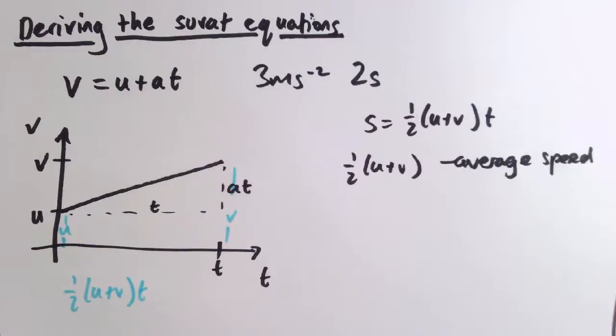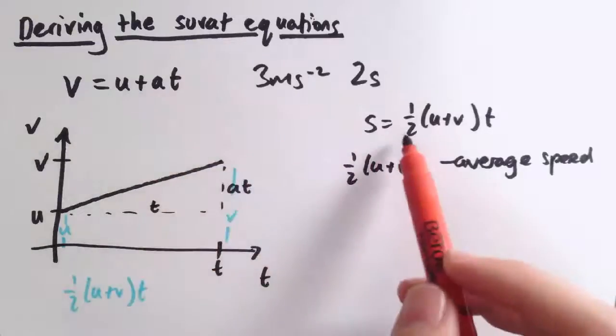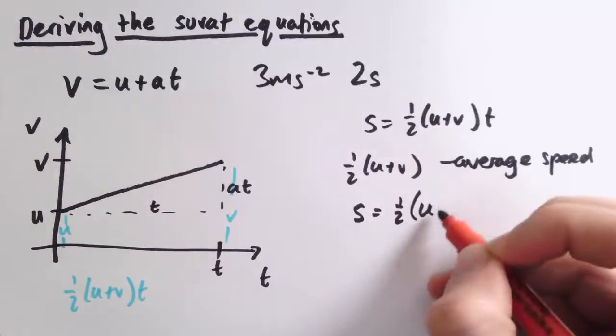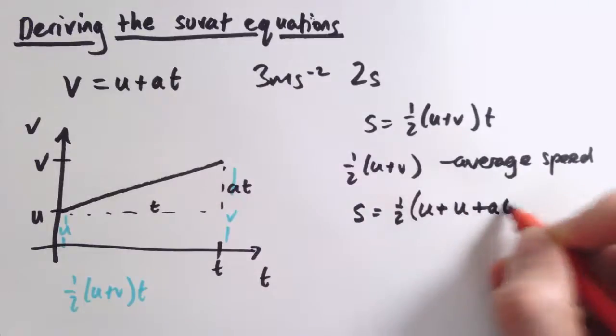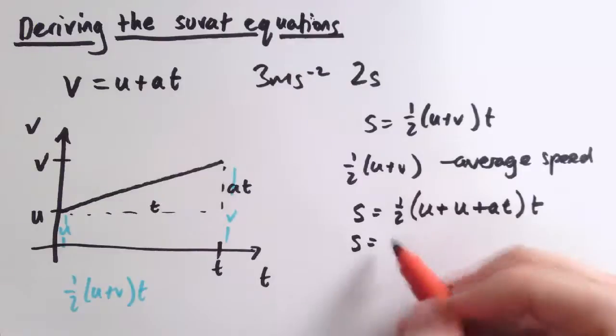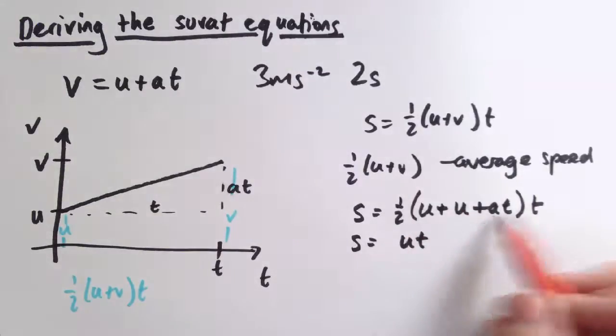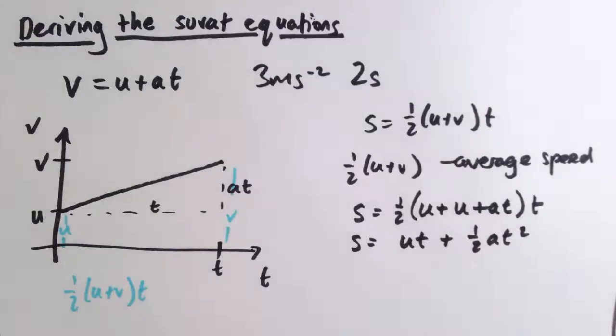Now that we know those two SUVAT equations, we can combine them to find the other SUVAT equations. So if we take v equals u plus at and substitute it into this one, we get s equals one-half u plus, and now we're going to rewrite v as u plus at, and multiply this out, and we get a half times 2u times t, that's ut, and a half times at times t, that's one-half at squared. So that's another one of the SUVAT equations.